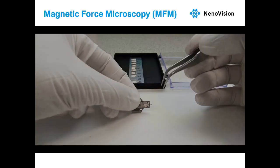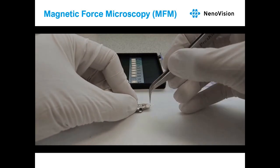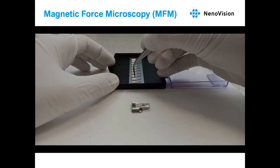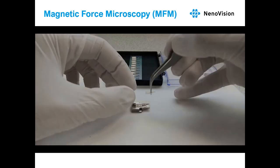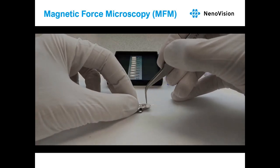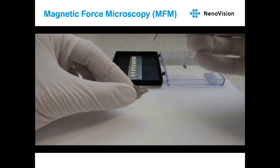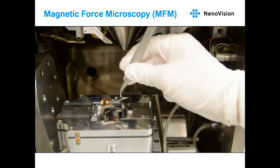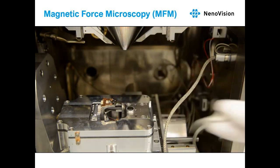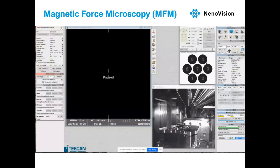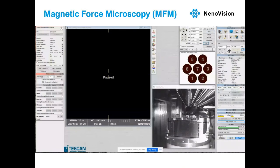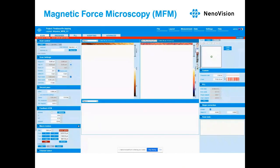At the very start we have to exchange the regular Akiyama probe for a NanoProbe Magnetic, which is an Akiyama probe with a magnetic nanowire at the end of the tip. That is the only difference — otherwise you insert it into the microscope as usual and then insert the whole microscope into the scanning electron microscope. In the NanoView software, the first thing is to find the resonance frequency of the probe.